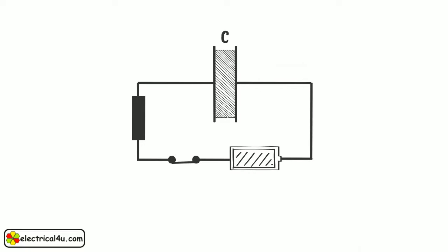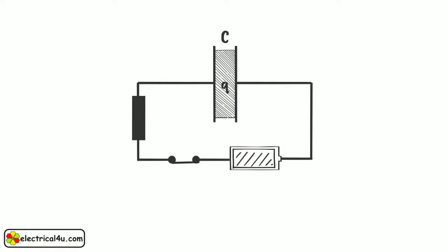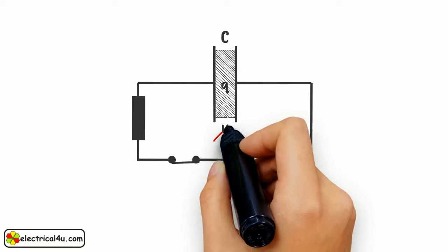As soon as we switch on the source, the charge Q will start accumulating in the capacitor. Due to this charge accumulation, the voltage established across the capacitor is gradually increased.